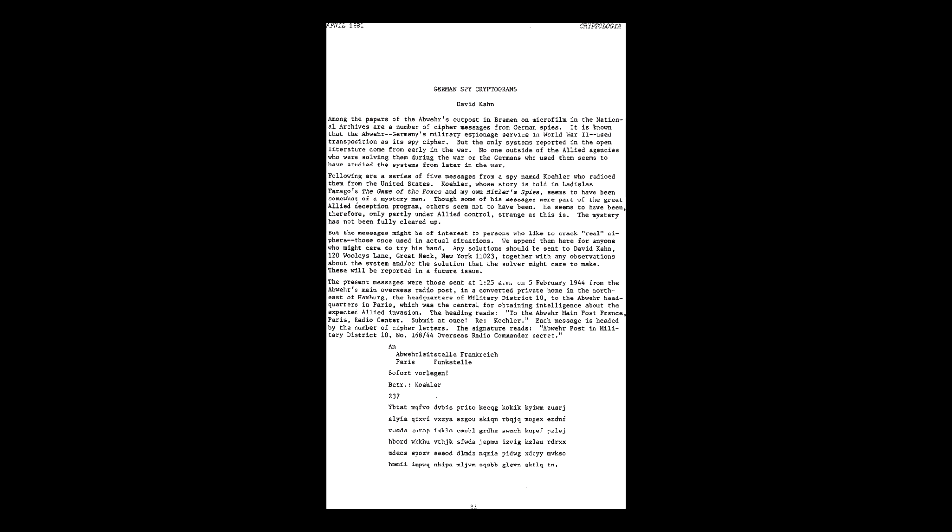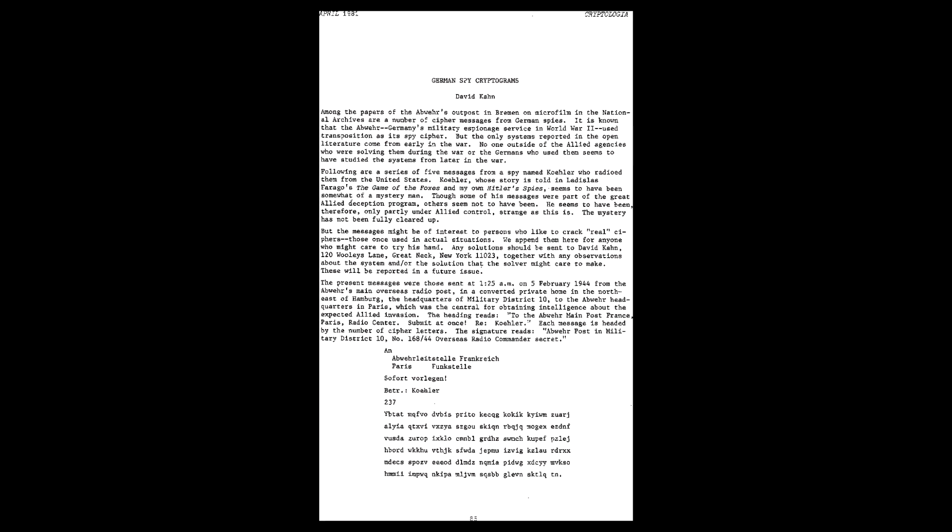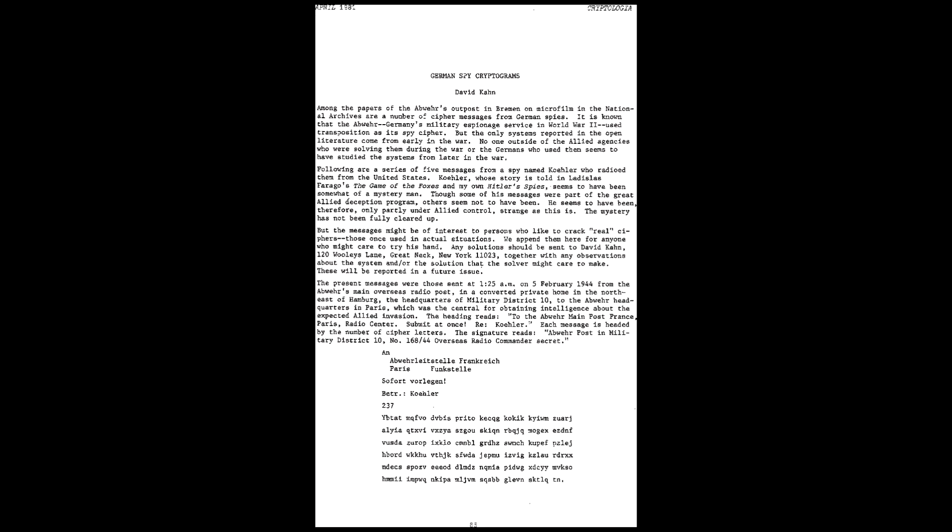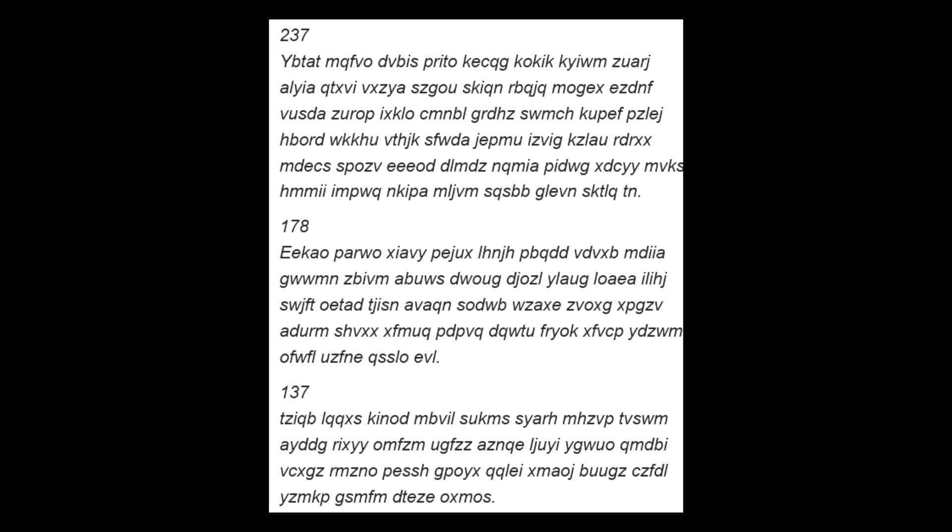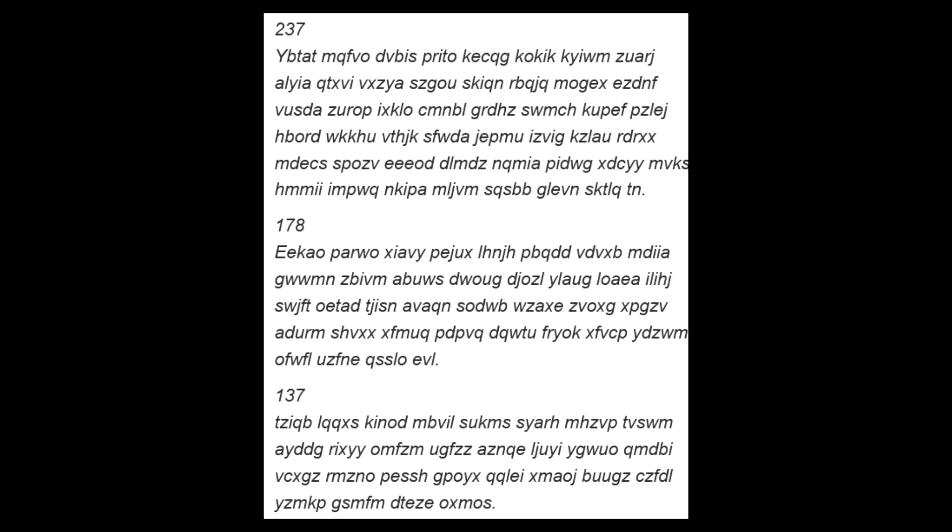Kula Cryptograms. David Kahn, a historian and journalist, is one of the preeminent researchers of cryptology. In 1981, he published five unsolved codes taken from a German outpost used by spies in World War II. Kula was a spy stationed in America who sent these five messages back to the outpost. Each message is numbered with its number of characters and broken up into words of five letters each, except for the last word, which can be any length.